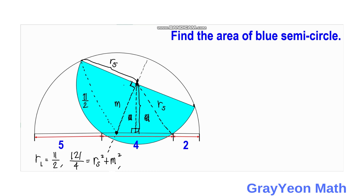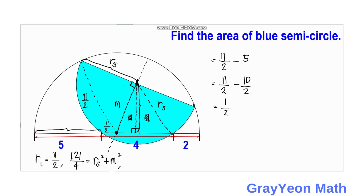Since we know this distance is 4, and this other is 5, the radius of the larger semicircle is 11/2. To get this distance we subtract: 11/2 − 5 = (11 − 10)/2 = 1/2. So this distance becomes 1/2. This other distance is 7/2, because the whole distance is 4 and 4 − 1/2 = 7/2.